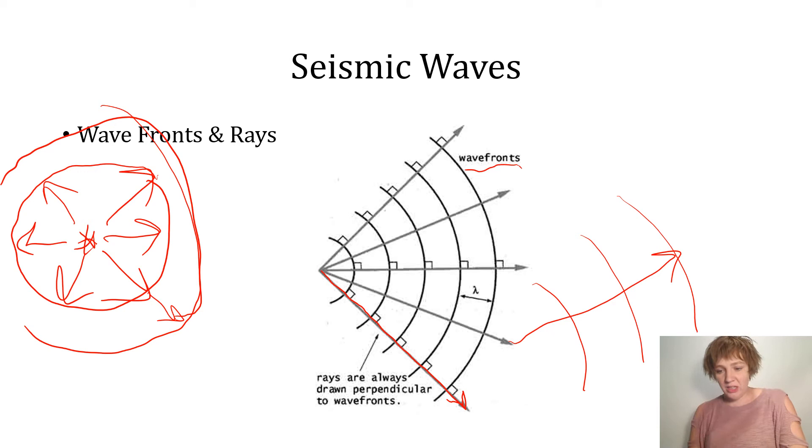So wave fronts show you the location of the wave at any point in time, and especially in relation to where it started. And the ray path shows you the path that that energy has taken through the medium. So the rays show you the direction and the wave fronts show you the greater extent that that wave has traveled.